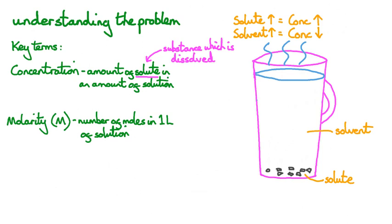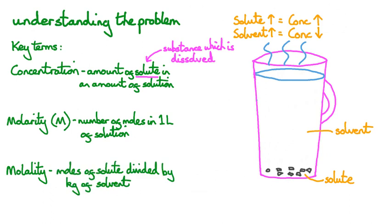One final term to discuss is molality. Generally, molarity is the most common way of talking about concentration. But if we have a situation where the temperature is changing, molarity doesn't work, and this is where we use molality. The molality of a solution is the number of moles of solute divided by kilograms of solvent, and the symbol for molality is usually a lowercase italic m. But for this video, we're going to use molarity.